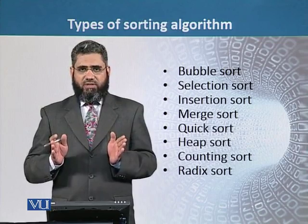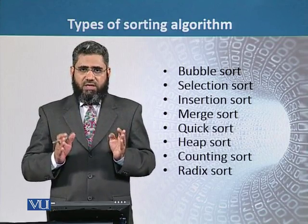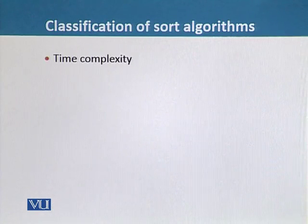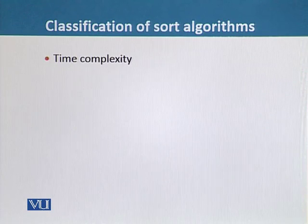Now we will see the classification of sorting algorithms. The first parameter is time complexity, which is a measure of the rate of growth of time taken by an algorithm with respect to input size. Some algorithms will be relatively faster than others.